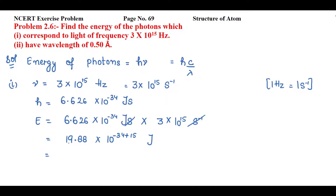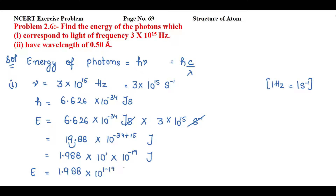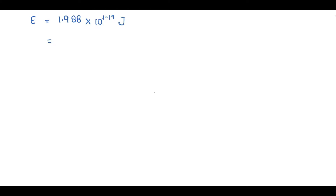According to scientific notation, there should be only one non-zero digit on the left side of the decimal. So we displace the decimal one digit to the left, giving 1.988×10¹. Since 10¹ and 10⁻¹⁹ are in multiplication, we add the powers: 1 + (−19) = −18. Therefore, the energy of a photon with frequency 3×10¹⁵ Hz equals 1.988×10⁻¹⁸ J.